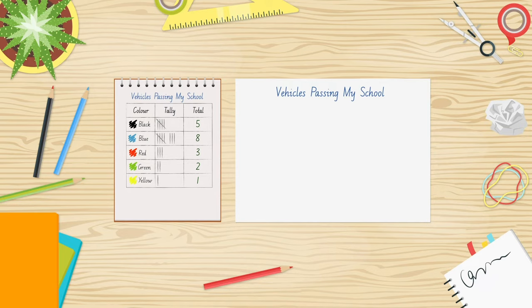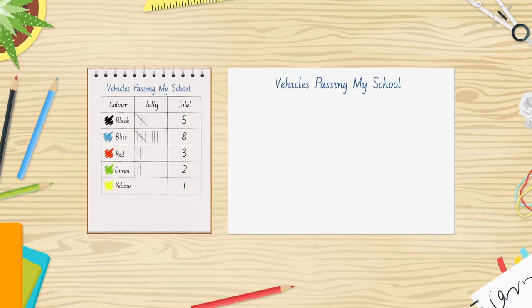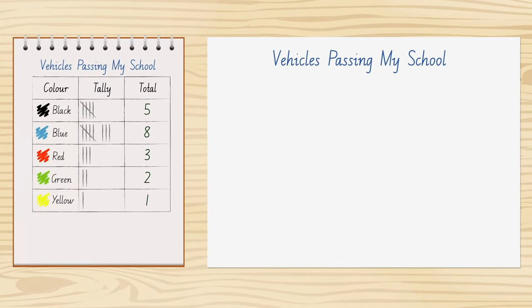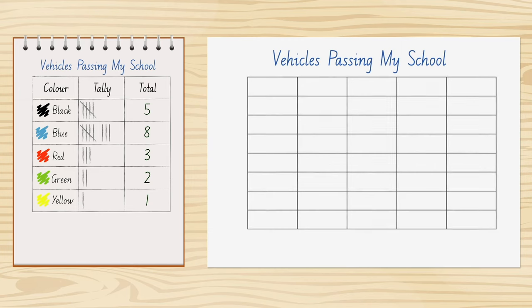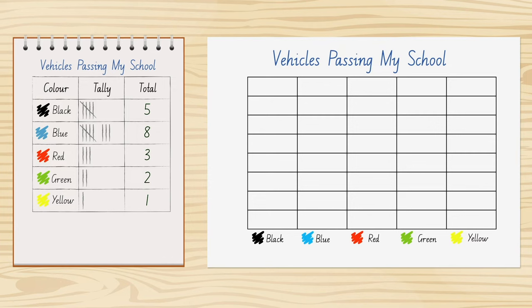Let's use the data that we have collected to make a bar chart. Label the bars with the vehicle colours we observed. Add a scale. Colour each bar to a height that matches our data.